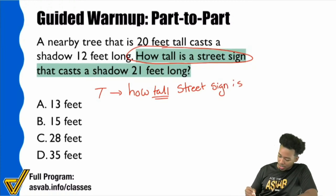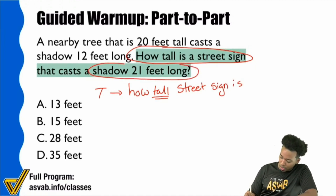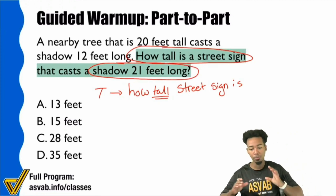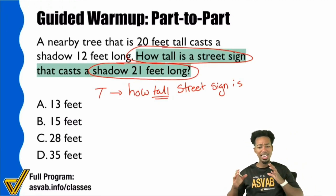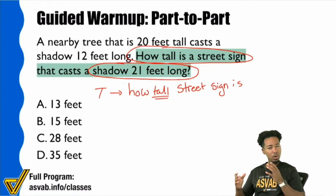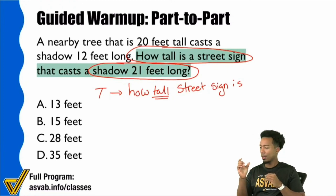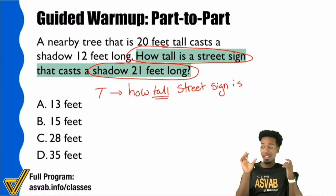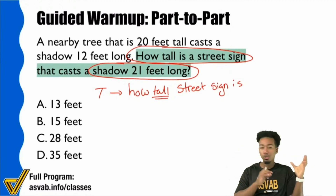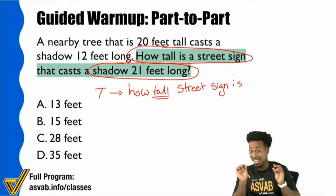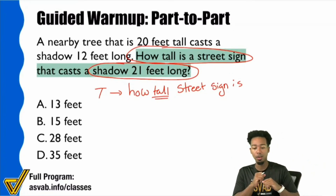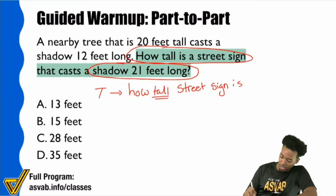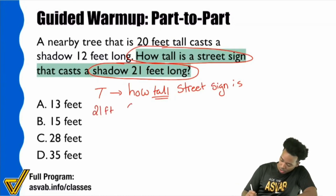It has a shadow 21 feet long. If you have any suspicions about whether this is a proportion problem — notice how in that same question sentence, it goes: how tall is this 21-foot-long object? That number you don't know is already being compared to something else. This is a hint that this is a proportion problem. So we don't know how tall the street sign is, and it has a 21-foot-long shadow.